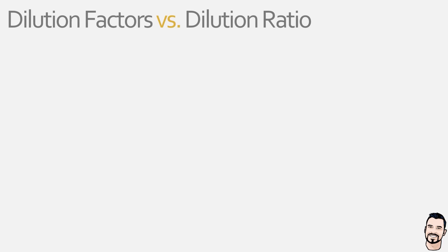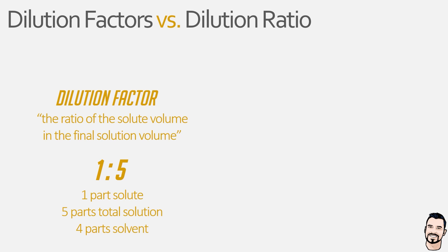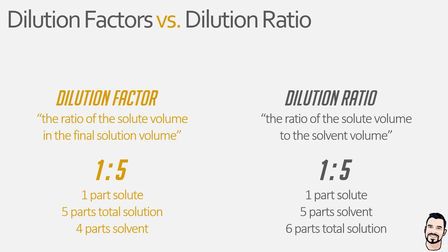Finally, dilution factors are not the same as dilution ratios. A dilution factor is the ratio of the solute volume in the final solution volume, so if we have a dilution factor of 1 in 5 we would have 1 part solute in 5 parts total solution, meaning we would have 4 parts solvent. A dilution ratio is the ratio of the solute volume to the solvent volume, so if we had a dilution ratio of 1 to 5 we would have 1 part solute to 5 parts solvent, meaning we would have 6 parts total solution. The key difference is in the phrasing: dilution factors look at parts of solute in parts of solution whereas dilution ratios look at parts of solute to parts of solvent and are much less common.